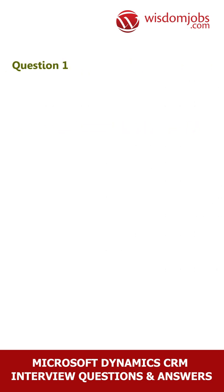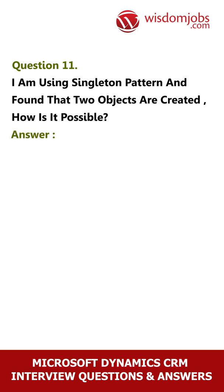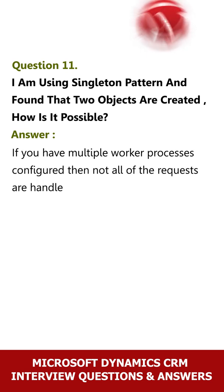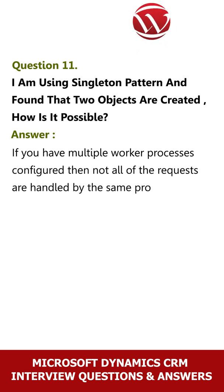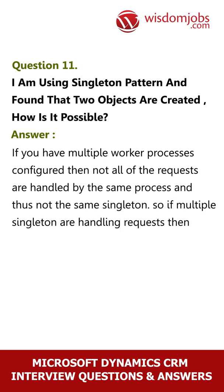Question 11: I am using the singleton pattern and found that two objects are created. How is it possible? Answer: If you have multiple worker processes configured, then not all requests are handled by the same process and thus not the same singleton. So if multiple singletons are handling requests, then obviously multiple objects will be created.